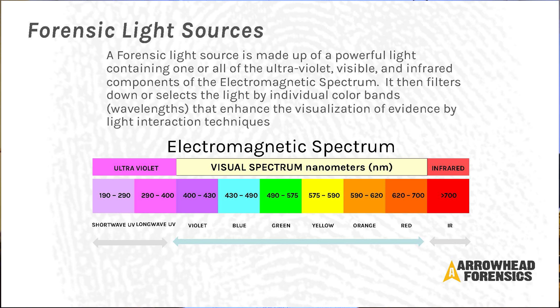We start with shortwave UV. Does anybody have an FSIS camera or do any shortwave photography? We're starting to find a lot more evidence in shortwave with the FSIS camera. Shortwave is somewhat dangerous — it's UV light, so you've got to make sure you're wearing a corrective covering for your face because it will give you a sunburn. There's a lot more evidence to be found in shortwave than we've ever been able to find before — it's kind of new technology.